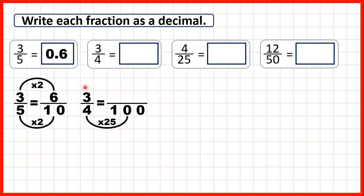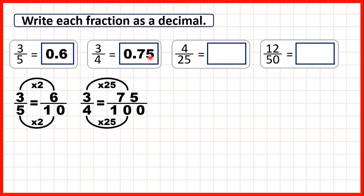What we do to the denominator, we do to the numerator as well. Three times twenty-five — counting twenty-five, fifty — the third multiple of twenty-five is seventy-five. So three quarters is equivalent to seventy-five hundredths. Remember, that denominator of a hundred tells us we can't go past the hundredths place value column, so we write seventy-five hundredths as 0.75. The seven gets shifted into the tenths because we can only have two digits after the decimal point with a denominator of one hundred.